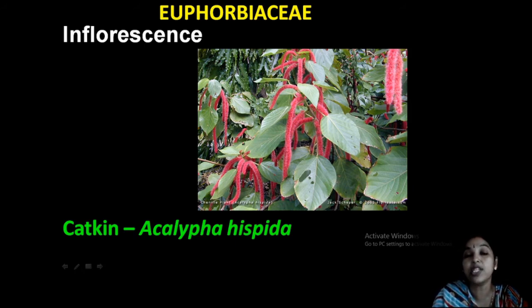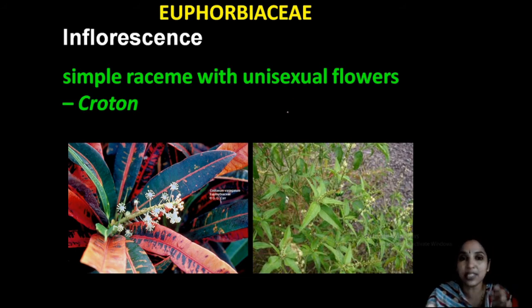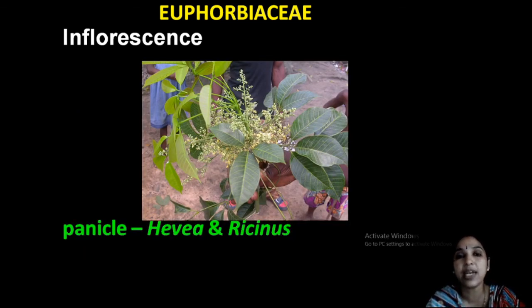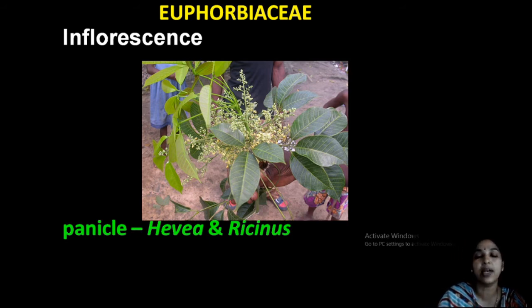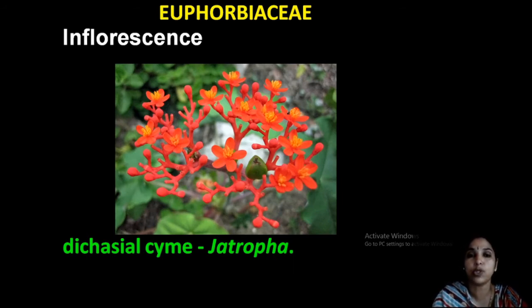Acalypha hispida has catkin inflorescence. The croton plant also is very familiar — it has a raceme with unisexual flowers. So variations exist in inflorescence. In rubber as well as Ricinus, panicle inflorescence is present. Avana — also panicle — branched racemes. Dichasial cyme is the inflorescence of Jatropha.